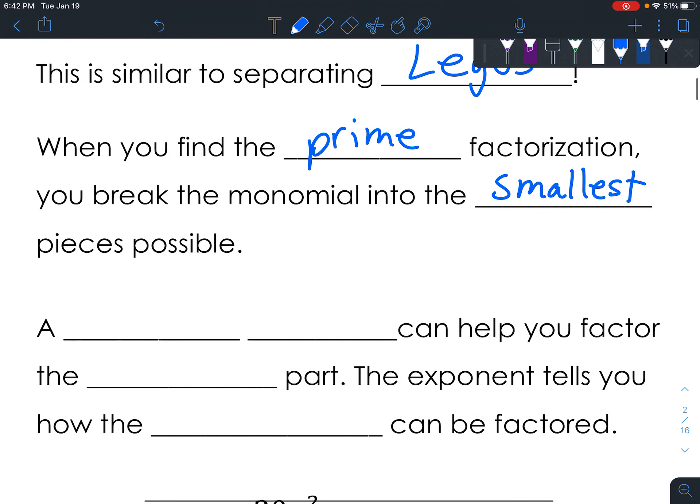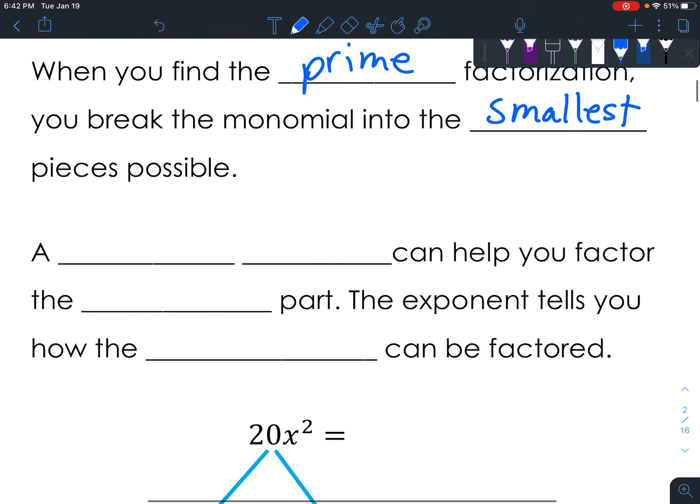There's a certain way, some are bigger, some are smaller, but there's a certain way that they break apart. A factor tree can help you factor the number part. The exponent tells you how the variable can be factored.